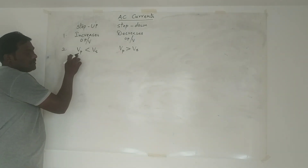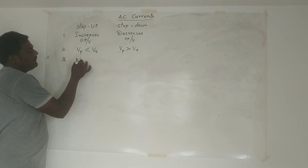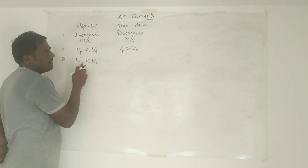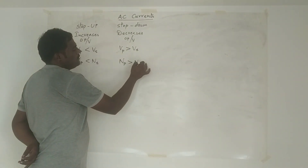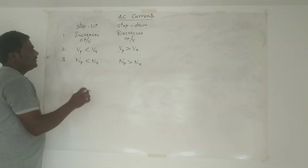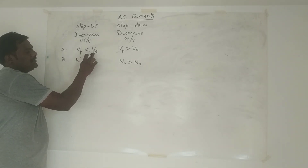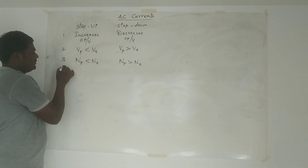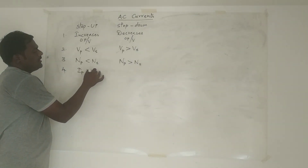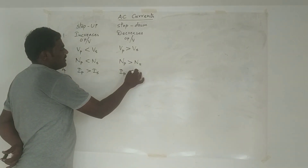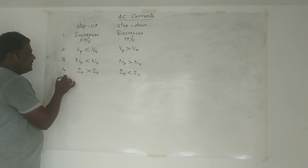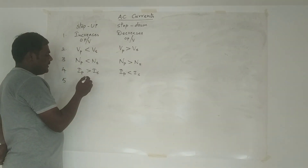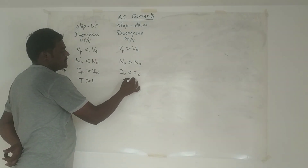Regarding the number of turns: in a step-up transformer, the number of turns in the secondary must be more than in the primary (Ns > Np). In a step-down transformer, the number of turns in the primary is greater than in the secondary (Np > Ns). For current: since current is reciprocal to voltage when power is constant, in a step-up transformer Ip > Is, and in a step-down transformer Ip < Is. The turns ratio (Ns/Np) is greater than 1 for step-up and less than 1 for step-down.